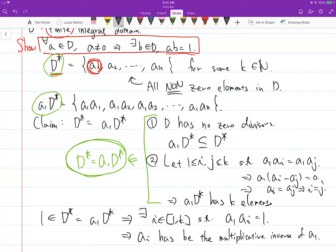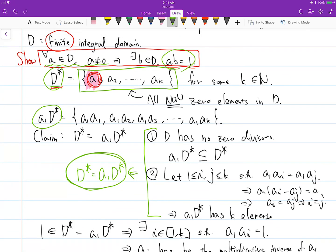So here we just proved that A1 has a multiplicative inverse, and obviously the exact same argument can be applied to any non-zero element in D. So we showed that for every non-zero element there exists an inverse. So D, this finite integral domain, has to be a field.